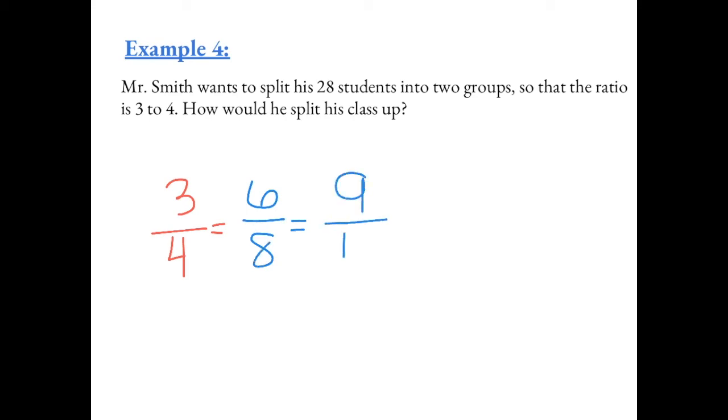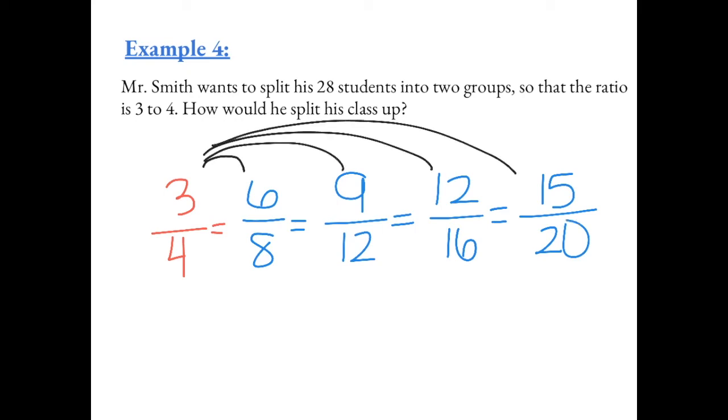9 to 12. We can have 12 to 16. We can have 15 to 20. So now if we stop here, all of these fractions are equal to 3 fourths because we did times 2 times 3 times 4 times 5. And if we were to simplify any of these, they would all equal 3 fourths.